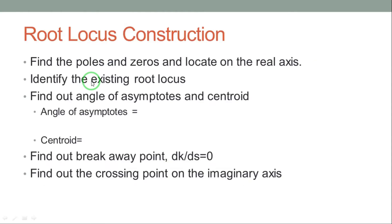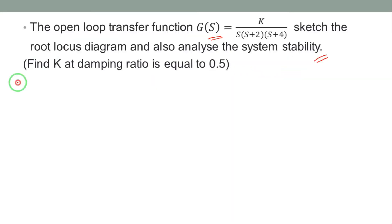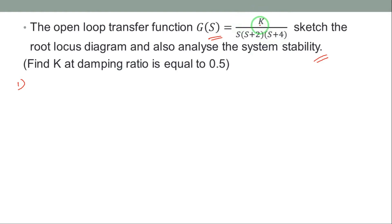Root locus construction follows easy steps. Step one: find the poles and zeros and locate them on the real axis. The open loop transfer function has zeros in the numerator and poles in the denominator. Since there are no s-terms in the numerator, the number of zeros is equal to none — that is, nil.